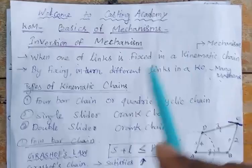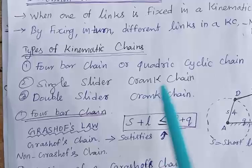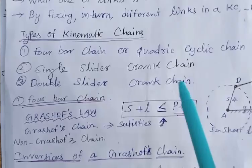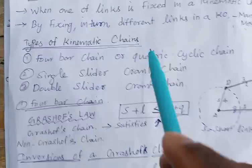The types of kinematic chains are: the 4-bar chain or quadratic chain, single slider crank chain, and double slider crank chain. These are all very important types of kinematic chains. The important pairs are the turning pair and sliding pair.